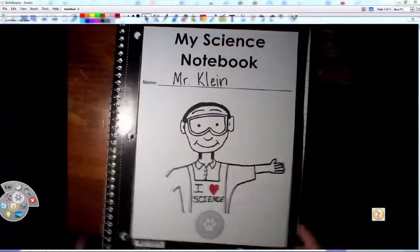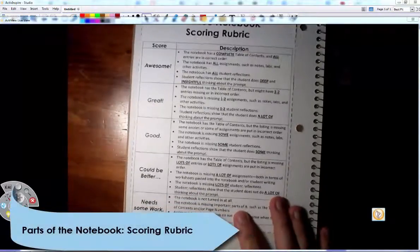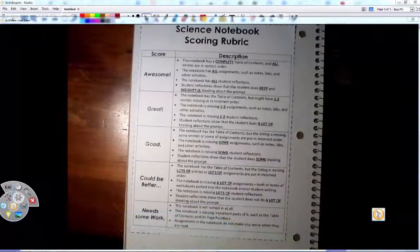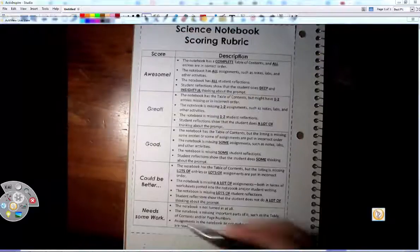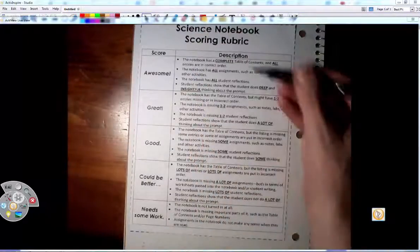We're going to open it up and look right here. If you're wondering how I grade these science notebooks, I'm going to use this rubric. And if you notice that it looks the same as our rubric for social studies, of course it does. Same things: need some work, could be better, good, great, awesome. And it has the descriptions of them.